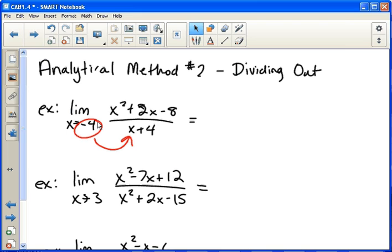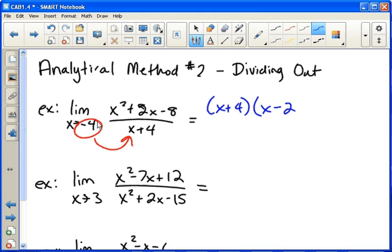So the solution to that is to factor. The top factors to be x plus four times x minus two. If you need to review factoring, feel free to pause the video and think that through. And then cross out the x plus fours. And now we're just left with x minus two.